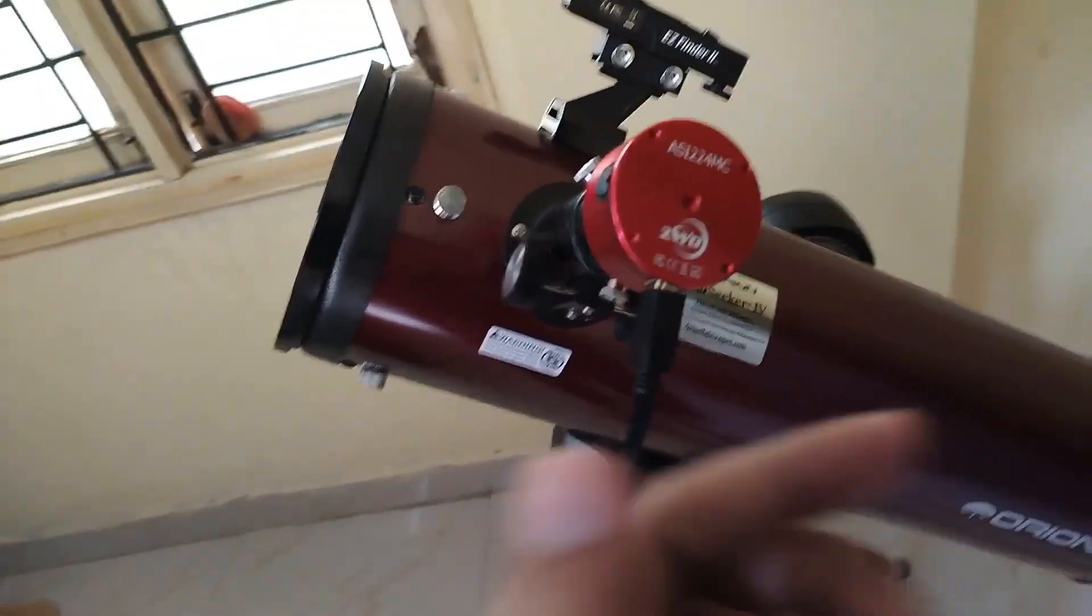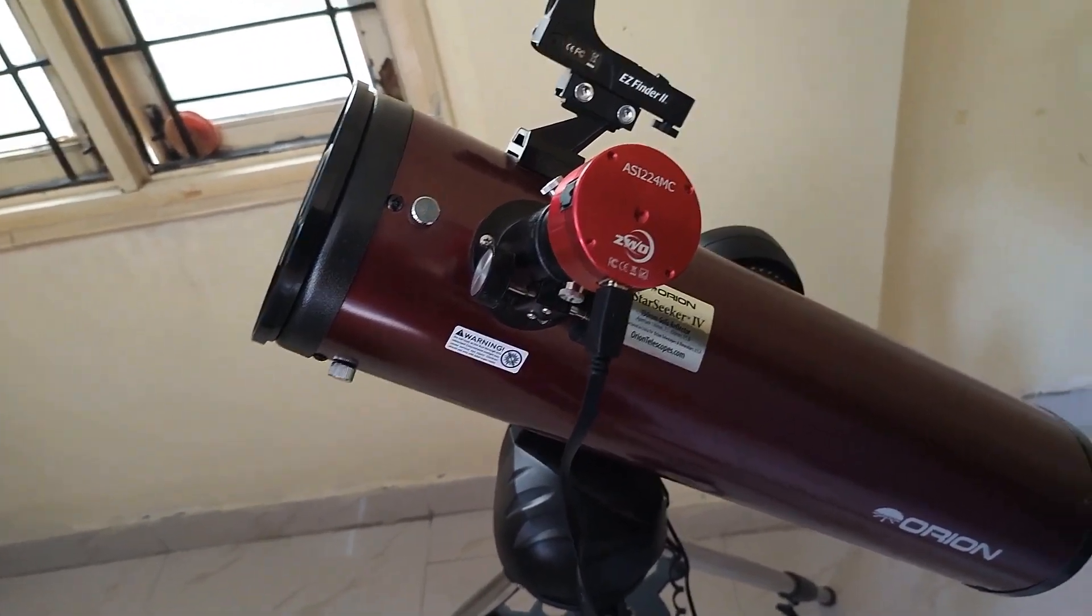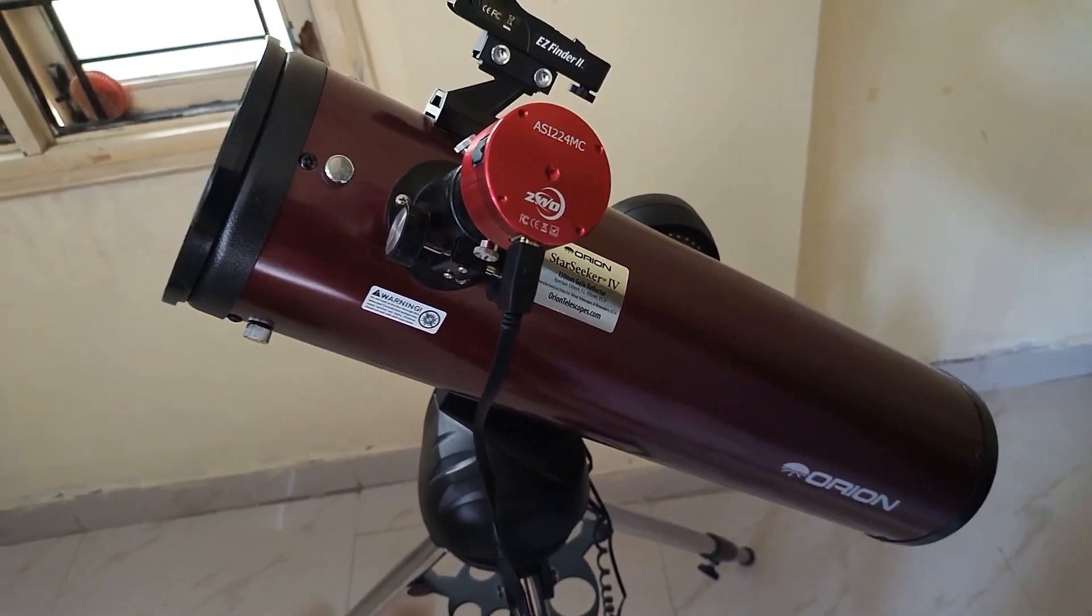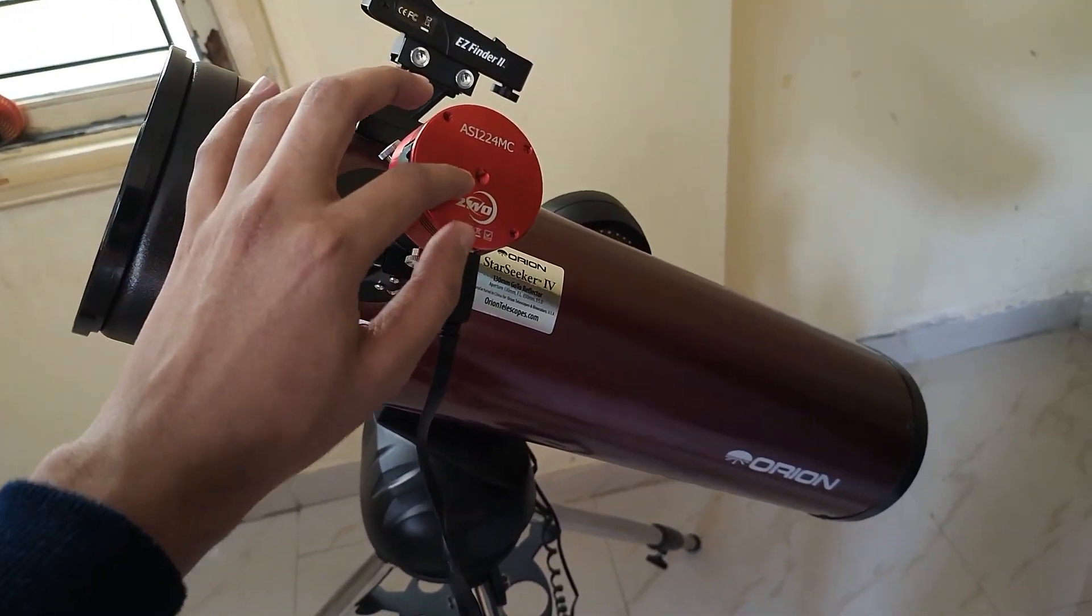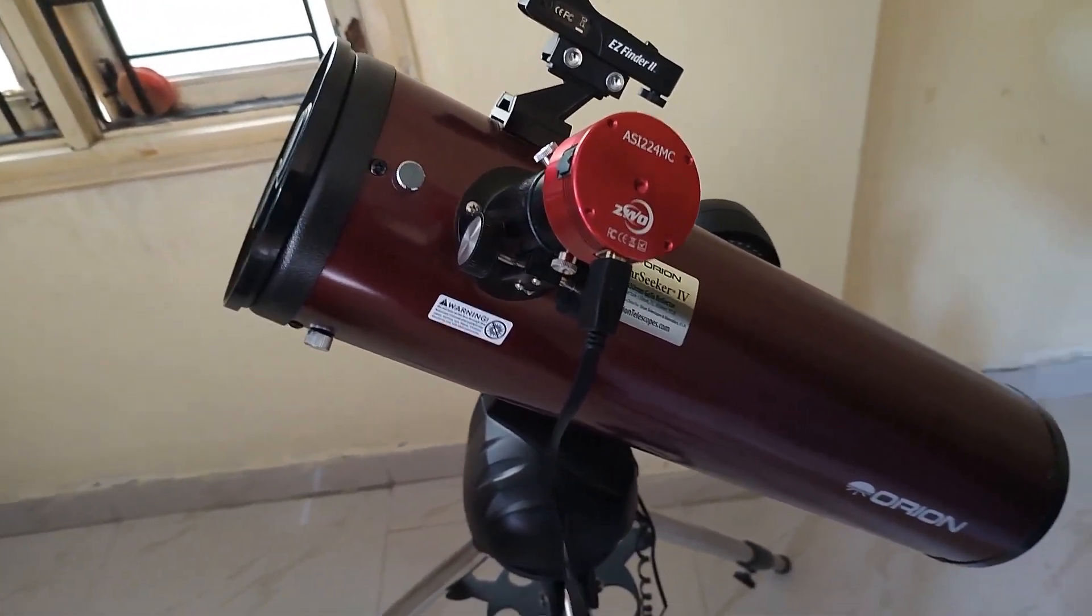And for the camera, I am using my ZWO ASI 224MC, which is the uncooled planetary camera, which I use for capturing planets and the moon.